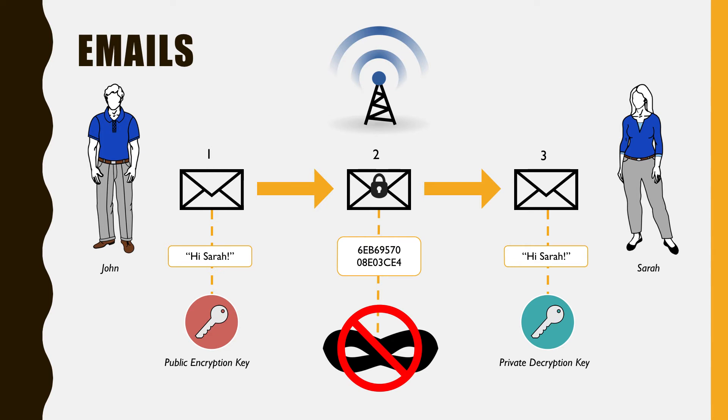Alternatively, public key encryption can be used in reverse to authenticate a message. For instance, Sarah could use her private key to sign the email and John may use the matching public key to validate the signature. In this case it is once again irrelevant that a third party might have access to the public key, as it is simply being used to verify the sender.